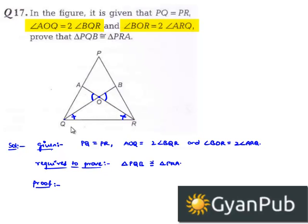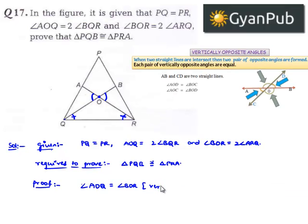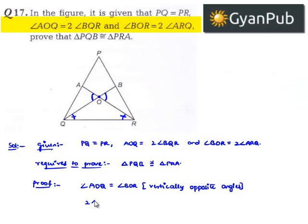If we consider angle AOQ and angle BOR, they are vertically opposite about the common point O. We know that vertically opposite angles are always equal, so angle AOQ is equal to angle BOR. Therefore, since angle AOQ equals angle BOR, we can say that 2 times angle BQR is equal to 2 times angle ARQ.